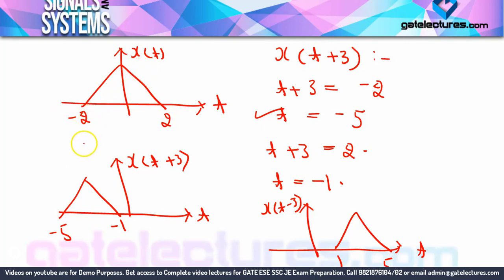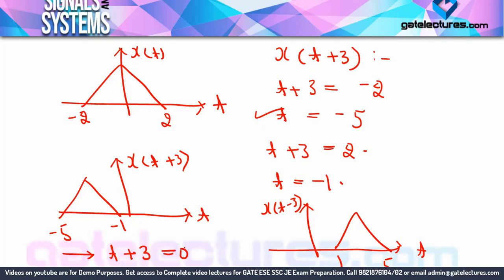A quick method for shifting: when the sign is plus (like t+3), subtract the shifting value from each time point. So -2 - 3 = -5 and 2 - 3 = -1. For minus sign (like t-3), add the shifting value: -2 + 3 = 1 and 2 + 3 = 5. Alternatively, set the expression equal to zero: t+3 = 0 gives t = -3; then add -3 to all existing time values.